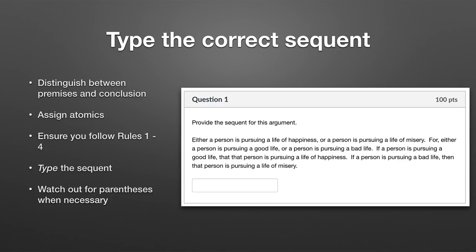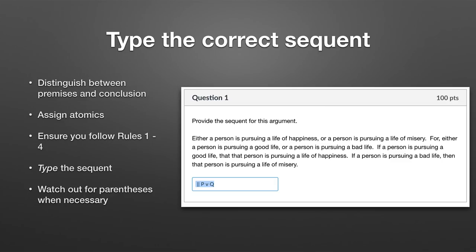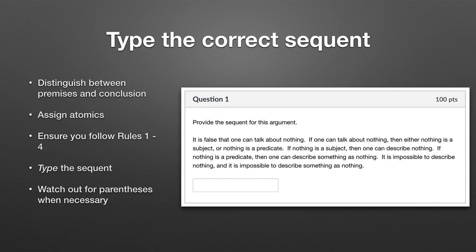Here's another example that can trip you up. Rule three says list the conclusion last in the sequence. Reading the argument: 'either a person is pursuing a life of happiness or a person is pursuing a life of misery' — the word 'for' after it indicates a set of premises follows. So that first sentence is actually the conclusion. Following rule three, you list it last in the sequent — premises first, then space, double vertical bars, space, then the conclusion. The conclusion is a disjunction: the first atomic proposition gets P, the second gets Q, giving P v Q.